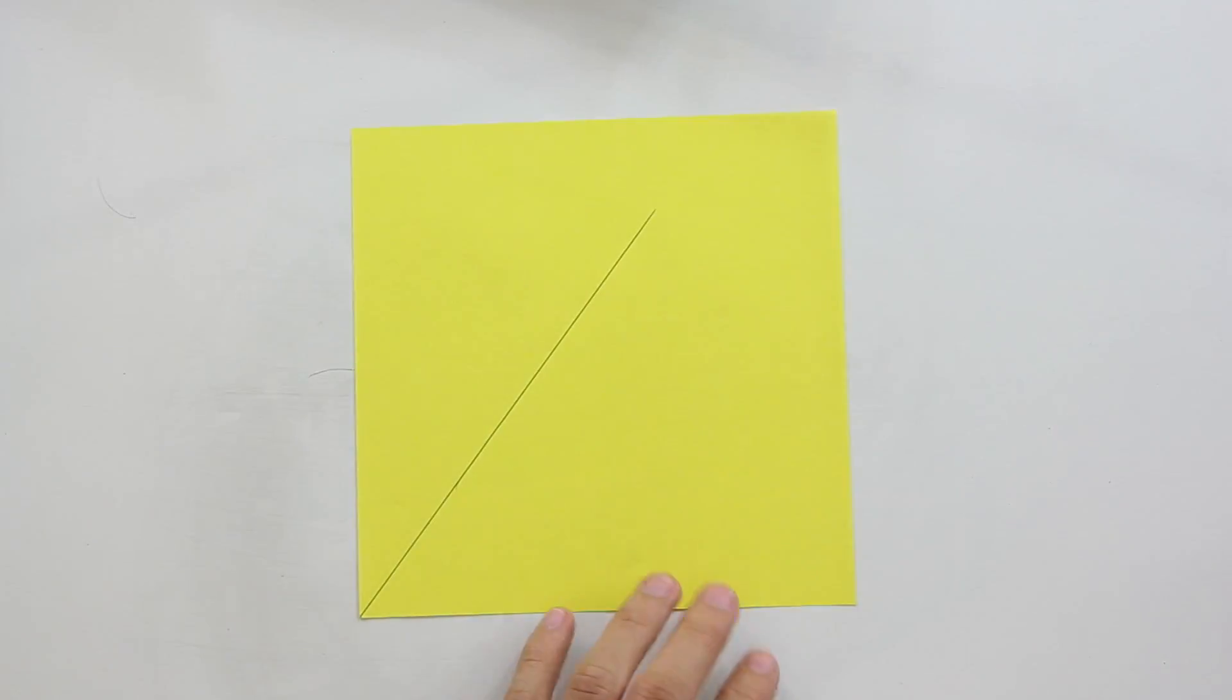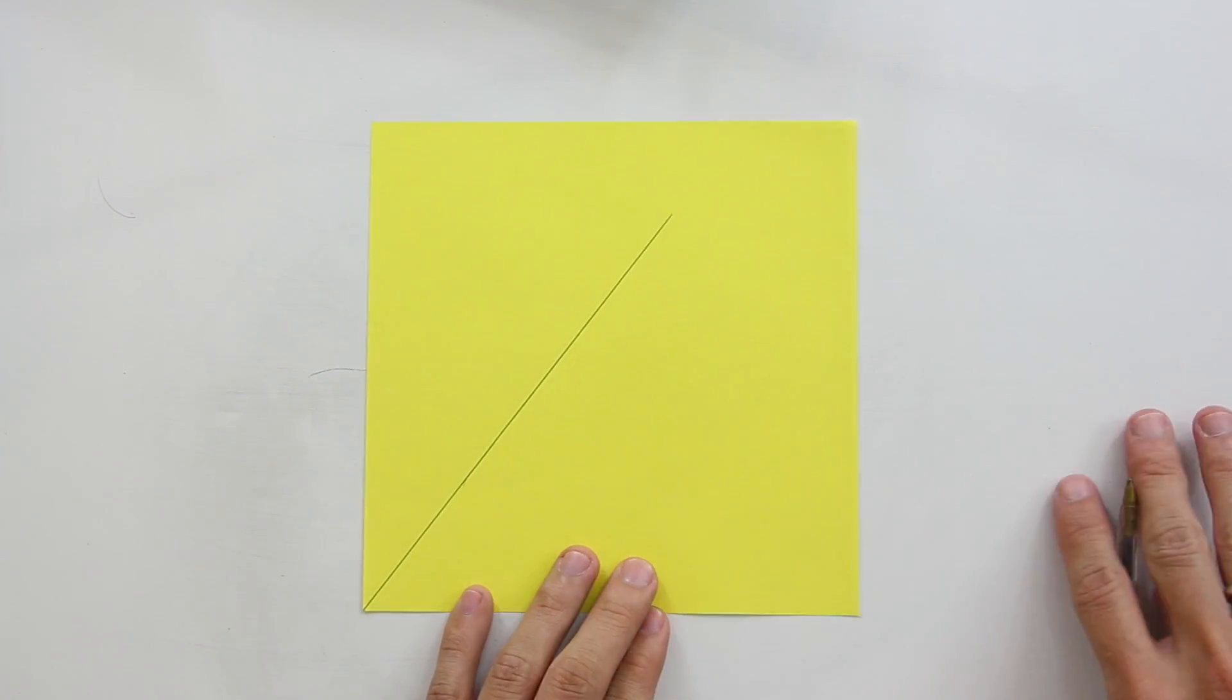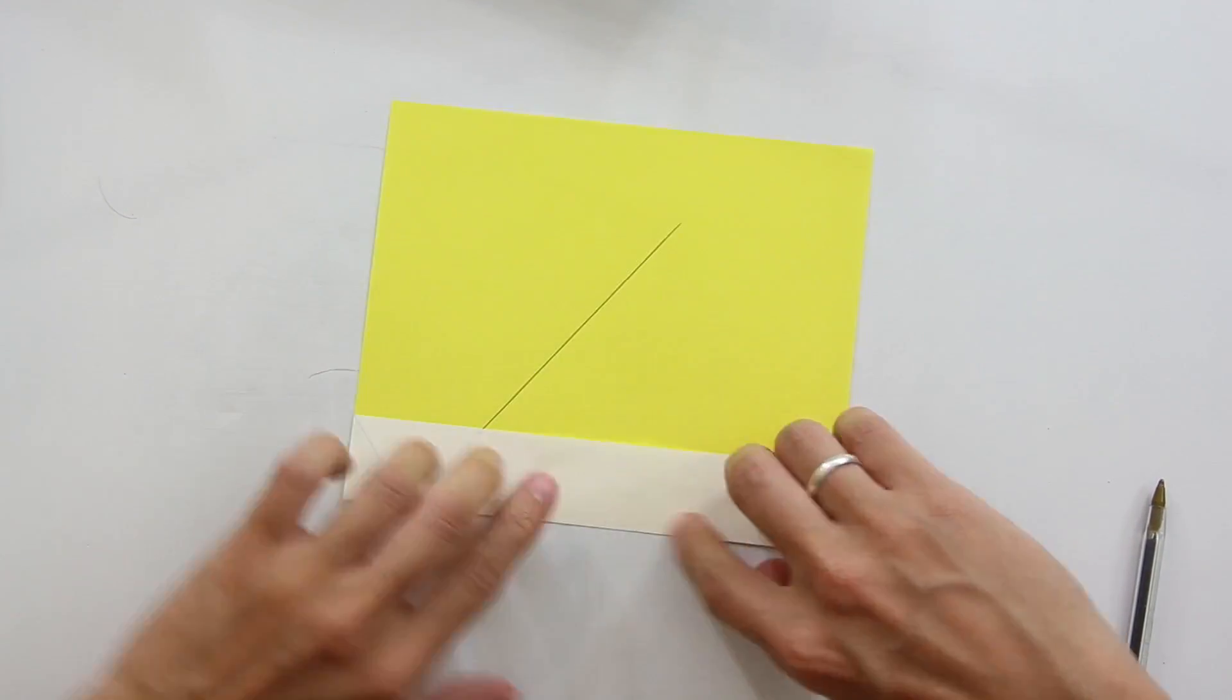Do something like this. Let's try to trisect this angle here. First make a fold parallel to one line.